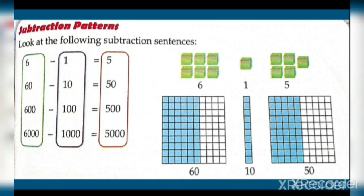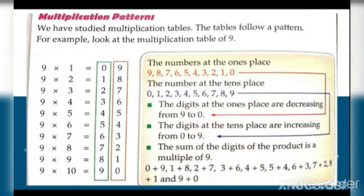Subtraction patterns: look at the following subtraction sentences — 6−1=5, 60−10=50, 600−100=500, 6000−1000=5000. We can see the digits remain the same (5) but the number of zeros increases by one each time, following a clear subtracting pattern.